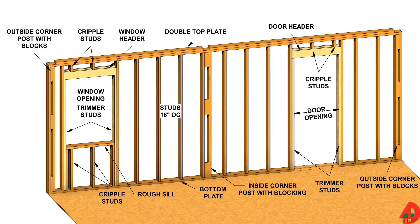Interior walls are also called partition walls, and they divide the living area of the house into separate rooms. Partitions can either be load-bearing or non-load-bearing. Load-bearing partitions support the ends of the floor or ceiling joists. Non-load-bearing partitions usually run in the same direction as the joists and carry little weight from the ceiling or floor above.